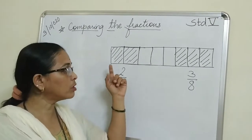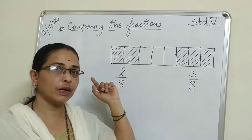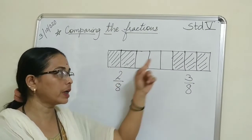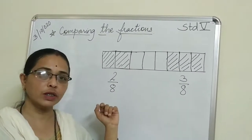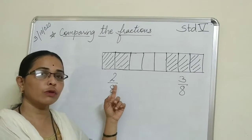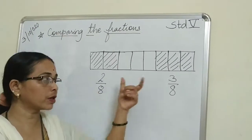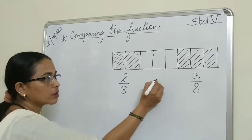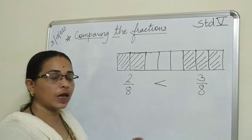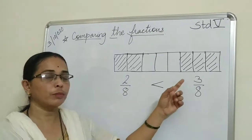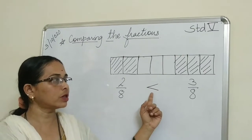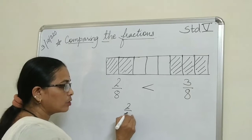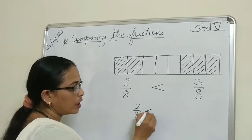These are like fractions because there are 8 parts - so 2 out of 8 and 3 out of 8. Which fraction is bigger here? 2 out of 8 or 3 out of 8? This part is bigger, so we put the sign opening towards 3 out of 8.